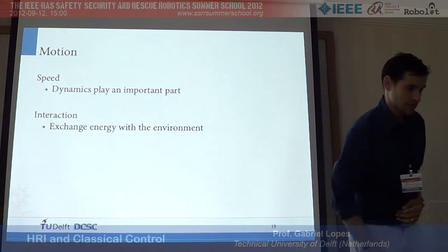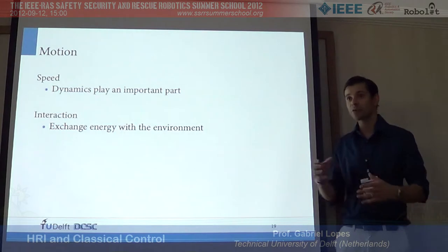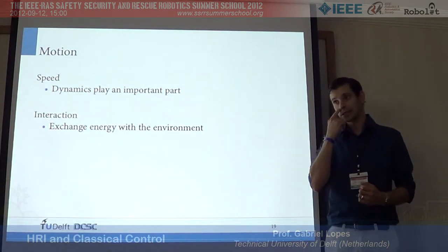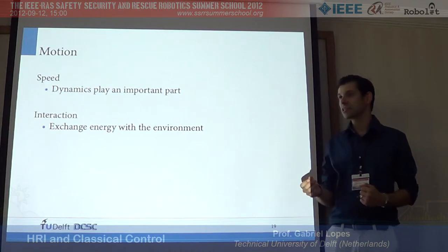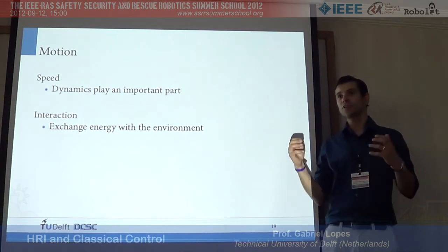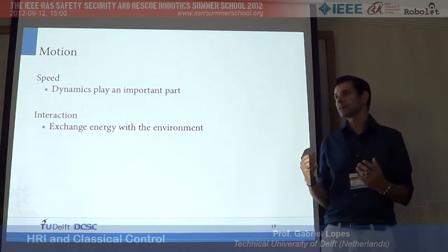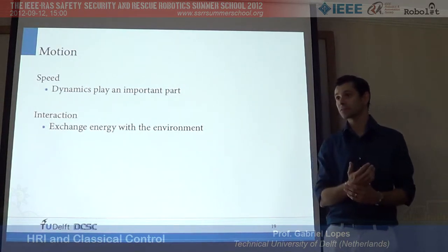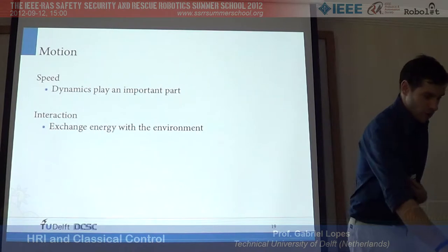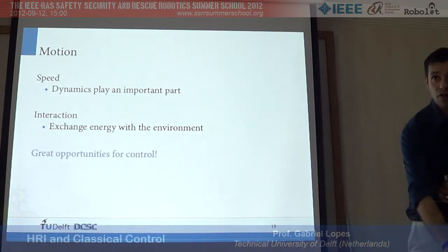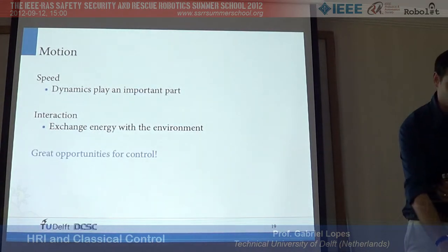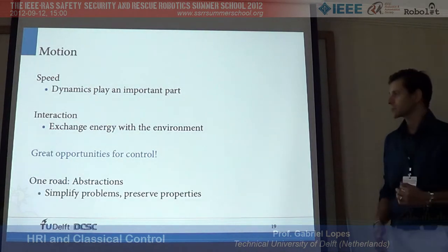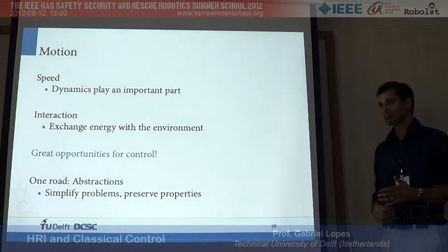Another element: interaction. If you want to interact with objects, you're exchanging energy with the environment, and you need notions of physical quantities — that's where systems and control can help a lot. These are all opportunities for control. I will present an example based on what we call abstractions.